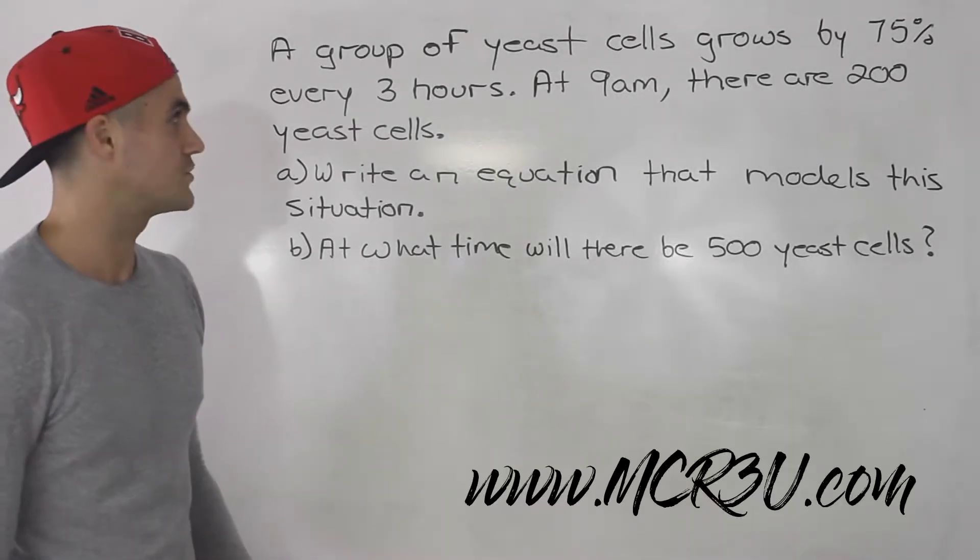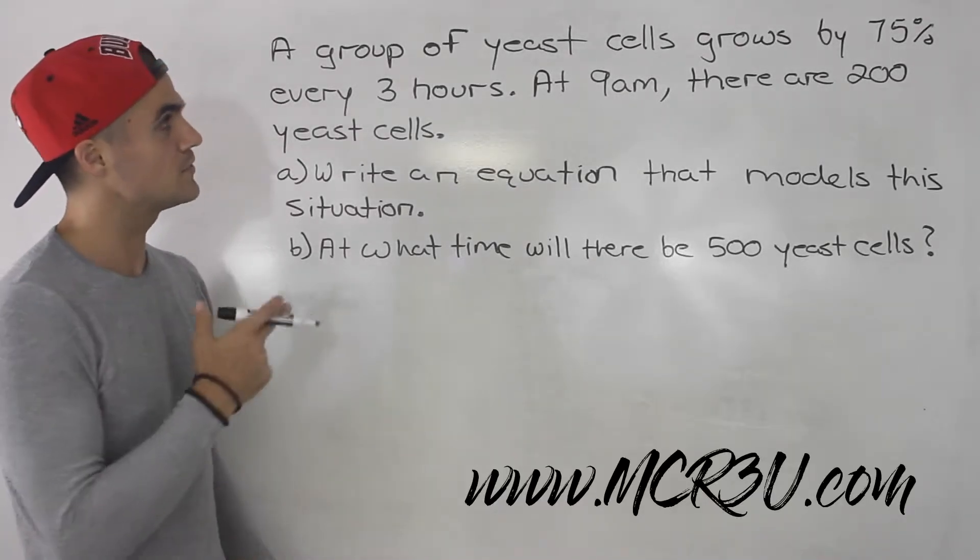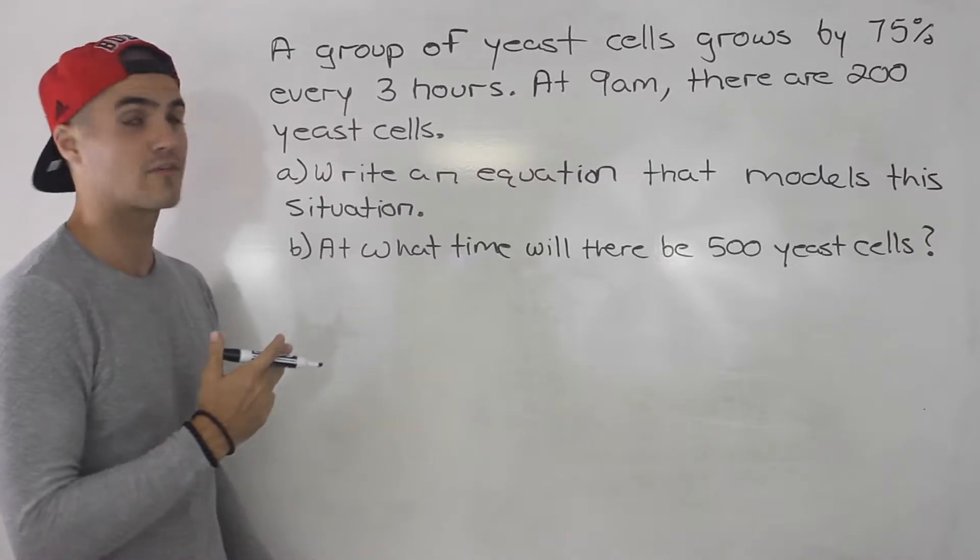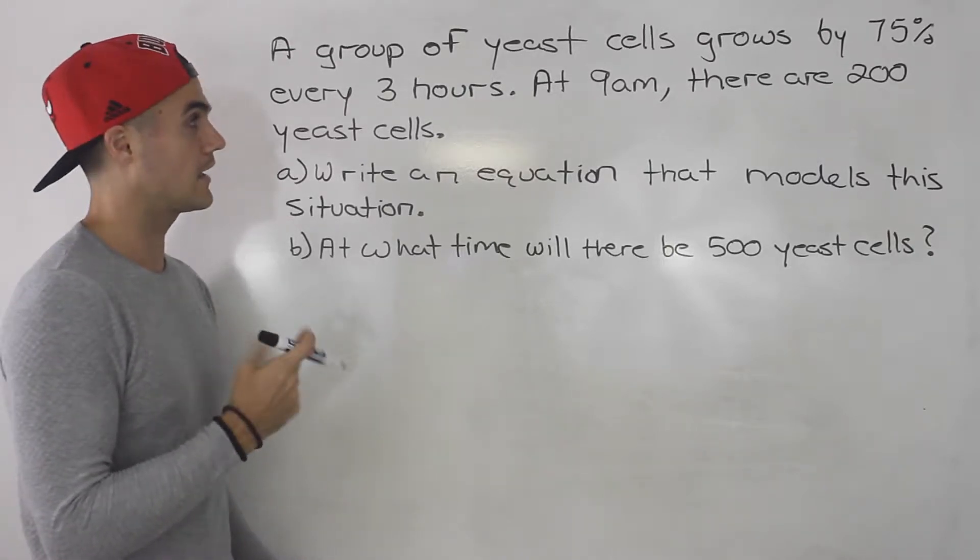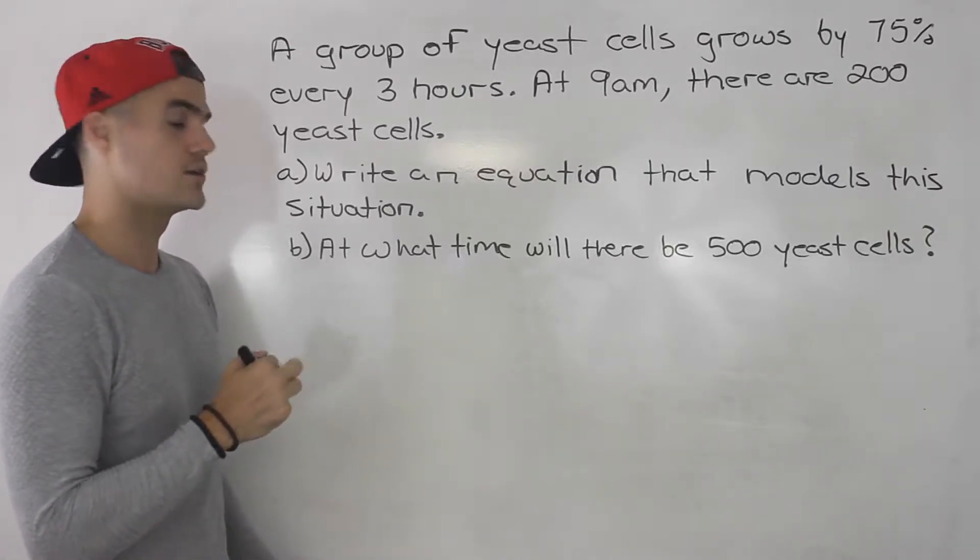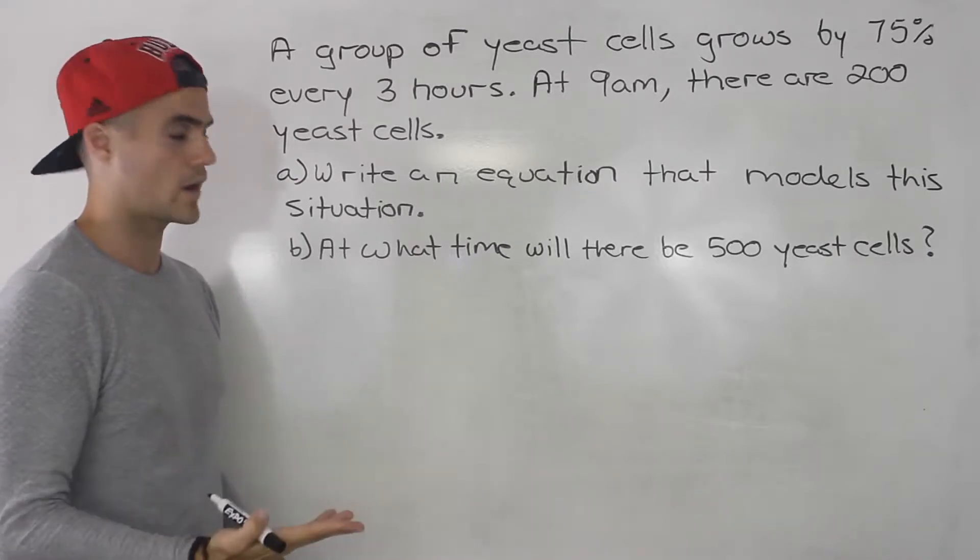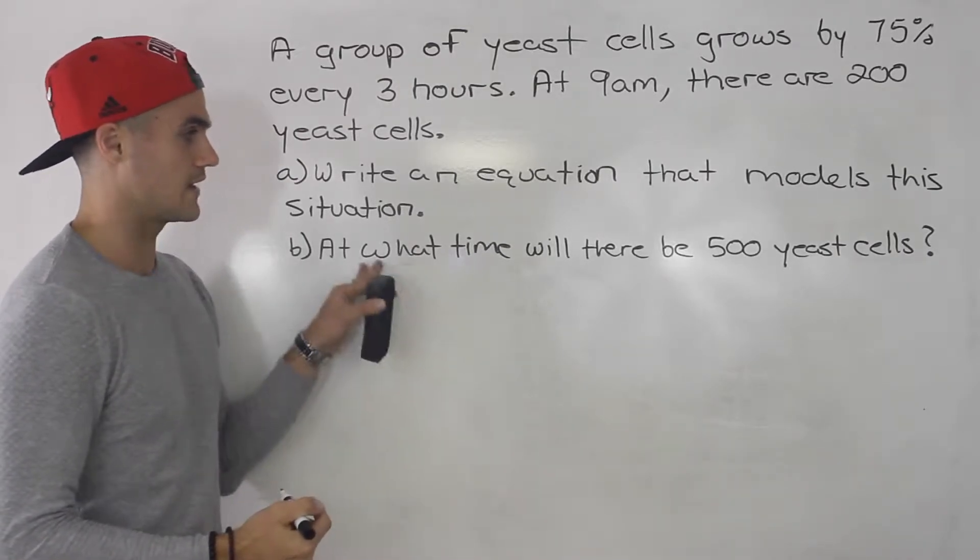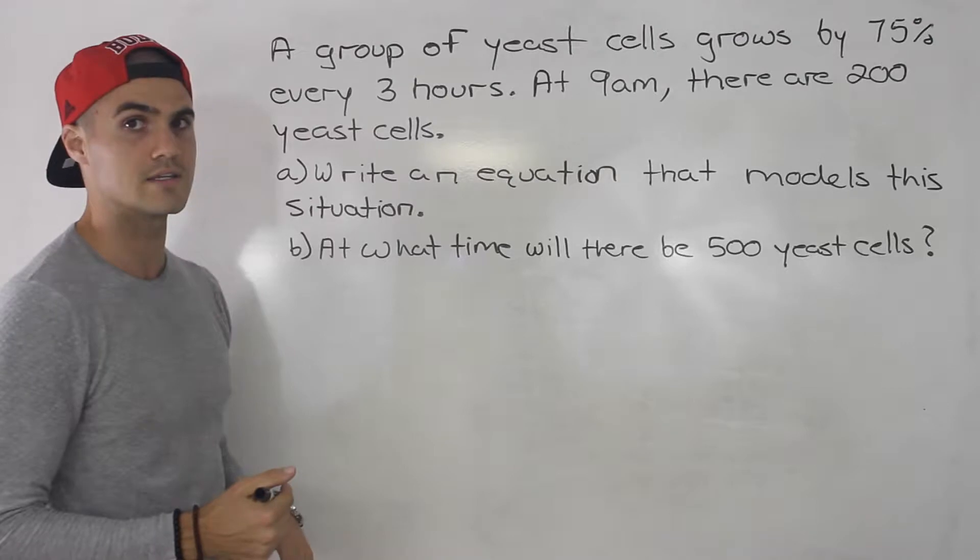What's up everybody? Welcome back. Moving on to the next test question. A group of yeast cells grows by 75% every three hours. At 9 a.m. there are 200 yeast cells. Two parts to this question: write an equation that models this situation, and at what time will there be 500 yeast cells for part B.